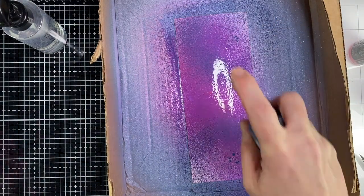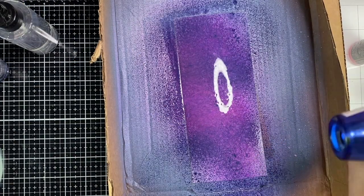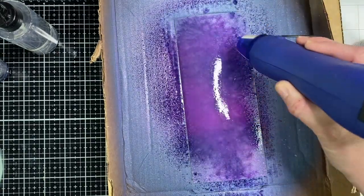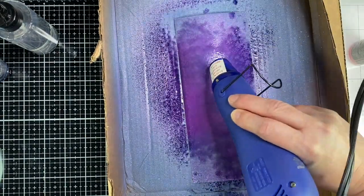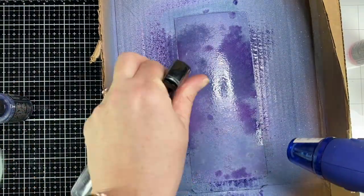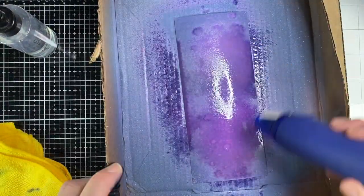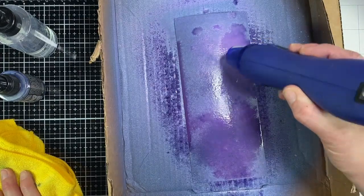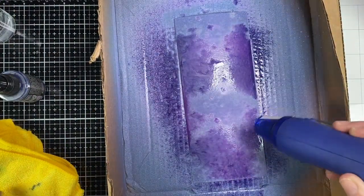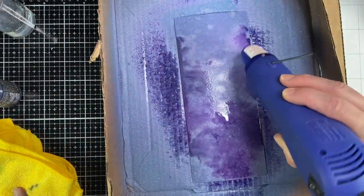Then I used distress oxide sprays and started layering the different colors with some spray of water. The first color I used was picked raspberry and then wilted violet and some chipped sapphire. Then I would squirt it with my water bottle and then hit it with my heat tool. I just kept doing that in layers and every time I would squirt it with the water it would reactivate the ink so then I could push that around and move it with the heat tool. I just kept doing this until I got the effect that I wanted.